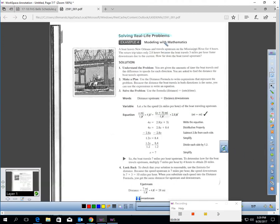Solving real-life problems. A boat leaves New Orleans and travels upstream on the Mississippi River for 4 hours. The return trip only takes 2.8 hours because the boat travels 3 miles per hour faster downstream due to the current. How far does the boat travel upstream? If you get problems like this, I would highly recommend drawing a picture.